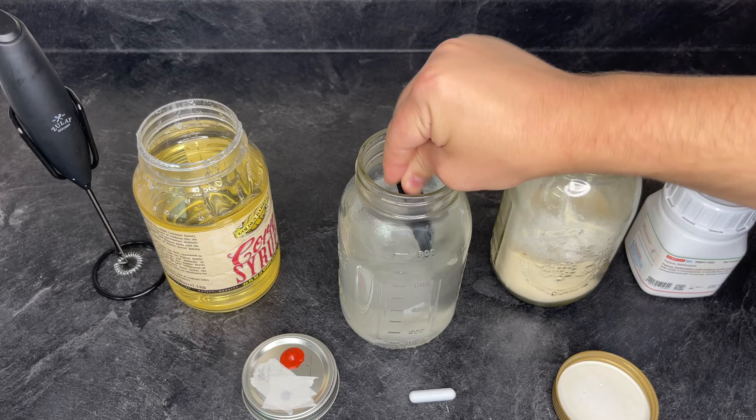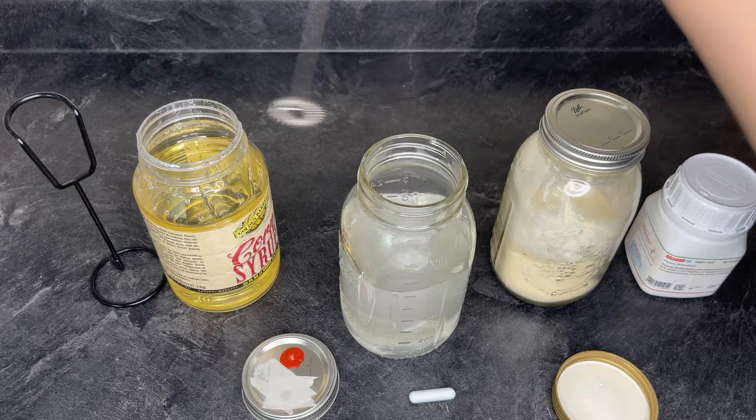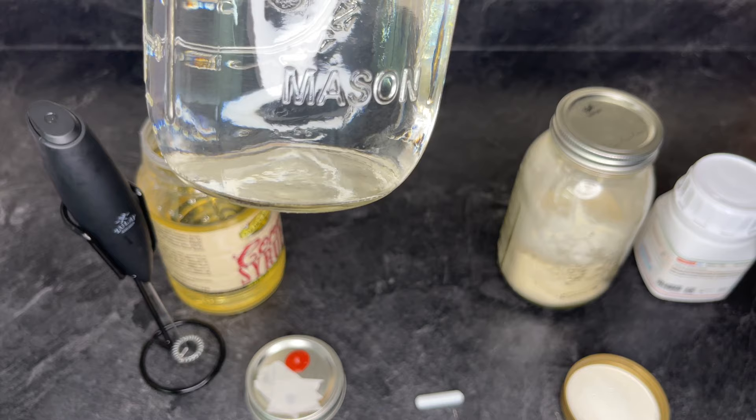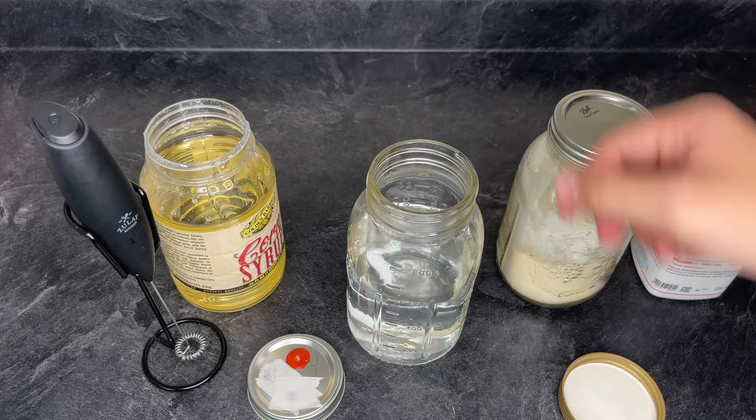I found it helpful to use this hand-held frother to mix up the solution. After all the ingredients have been mixed into the solution, I check to make sure there's no sediment and then I add a magnetic stir bar and my modified jar lid.